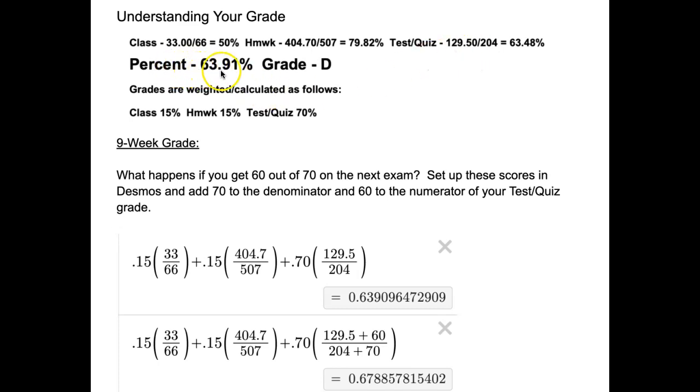This student's got 63.91% and has a D. Notice that classwork is weighted 15%, homework is weighted 15%, and your test and quiz scores are lumped together and account for 70% of your grade.